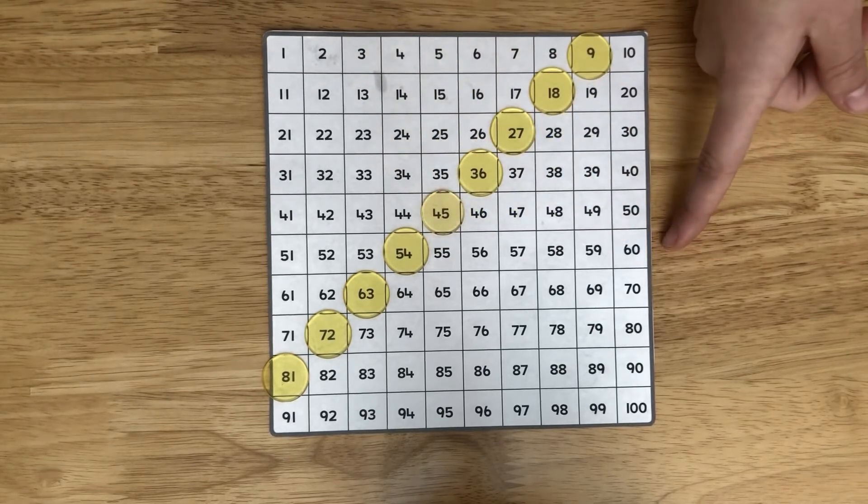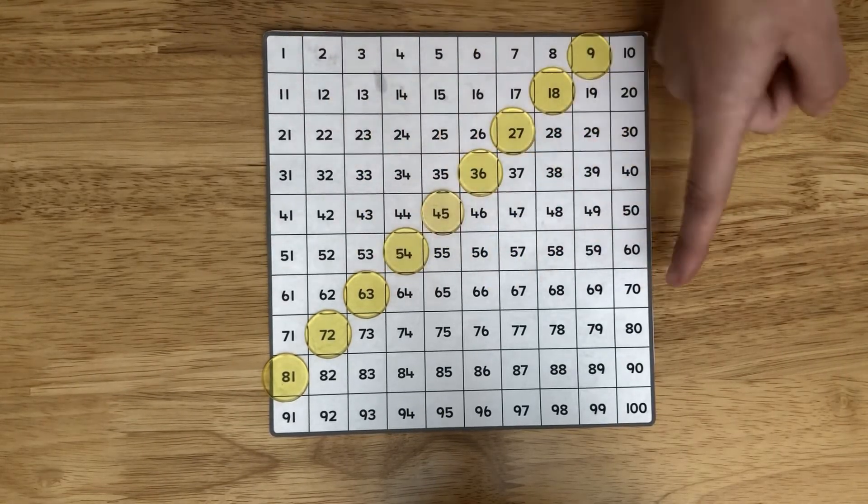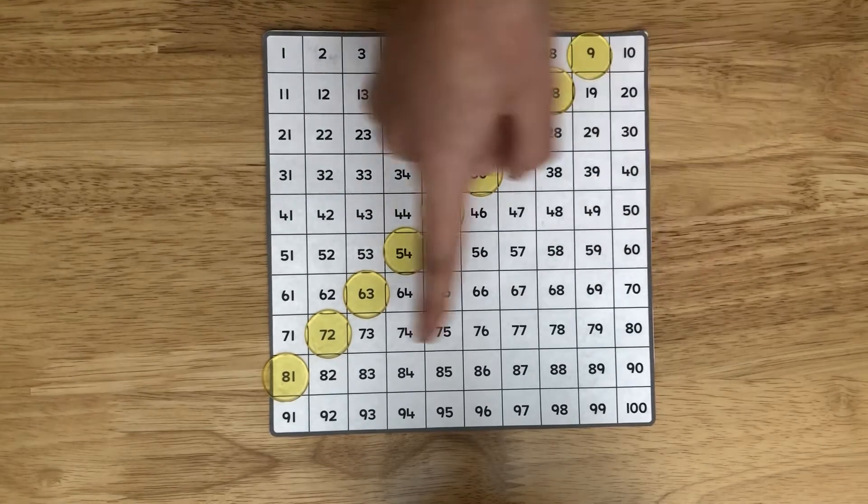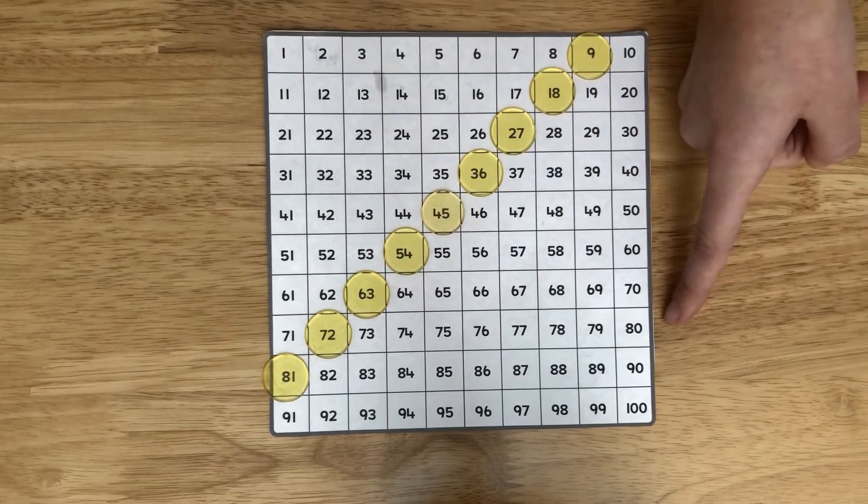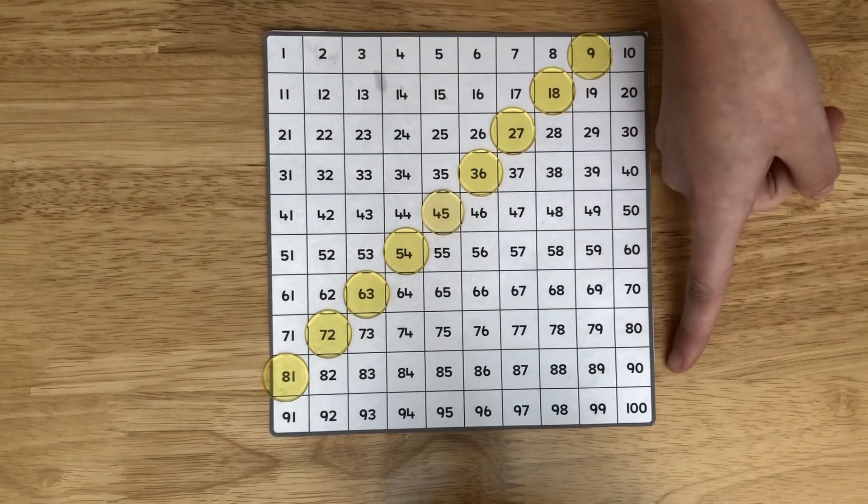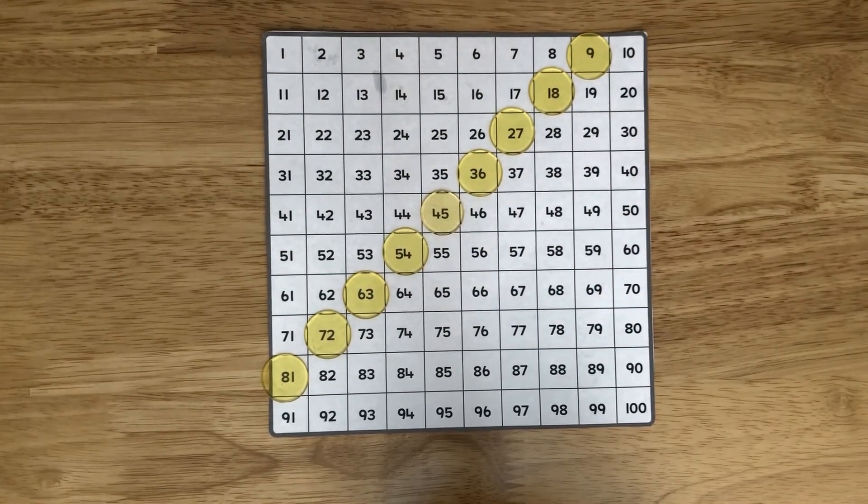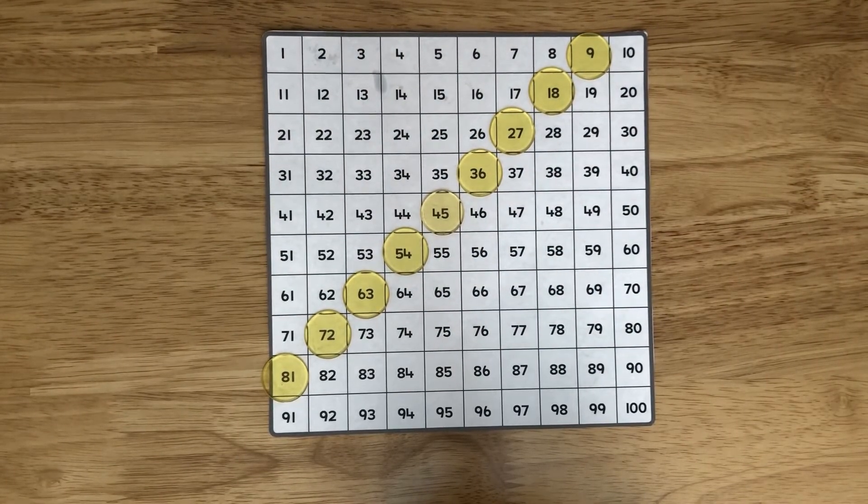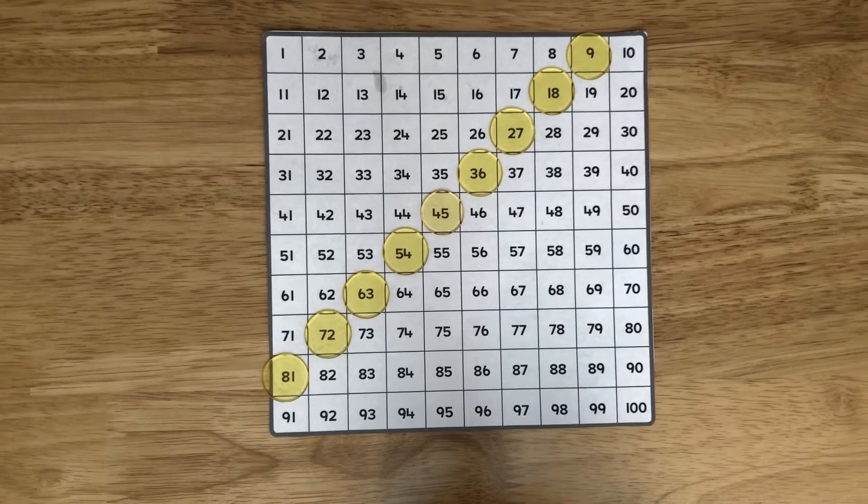54 is 6 away from 60. 63 is 7 away from 70. 72 is 8 away from 80. And 81 is 9 away from 90. That's pretty cool. There's heaps of cool patterns with our nines facts.